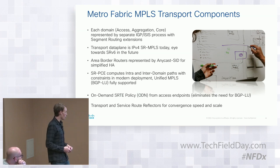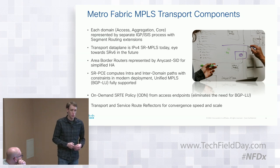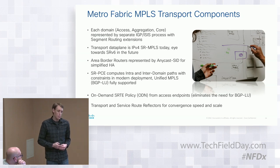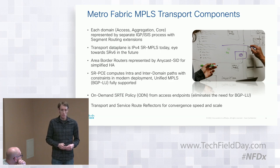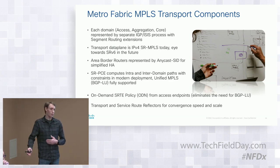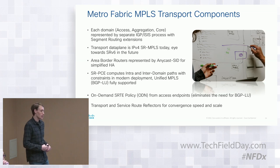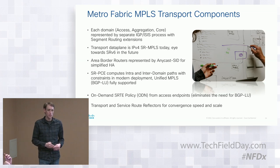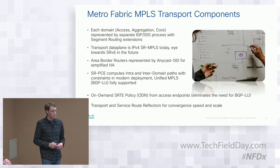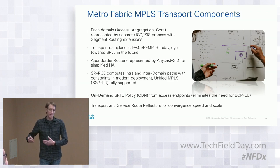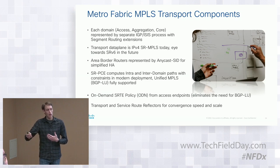We also use transport and service route reflectors. BGP service route reflectors have been around for some time — it's how I scale VPN-v4 or EVPN routes across a large network. Transport route reflectors are how we get topology into the PCE. We're using BGP-LS — BGP link state — to represent that IGP topology in a BGP NLRI, and that's how we communicate topology information to the PCE. That's constantly updated as topology changes happen.